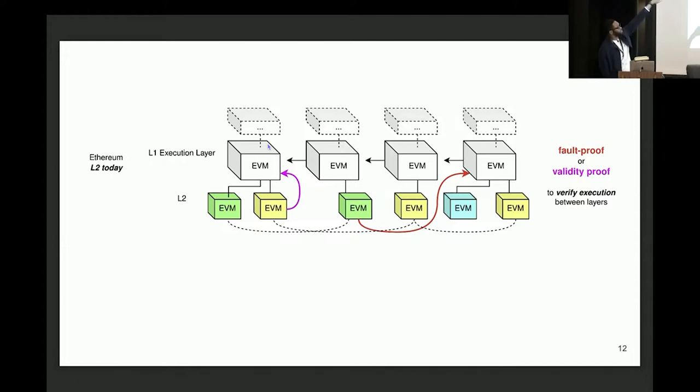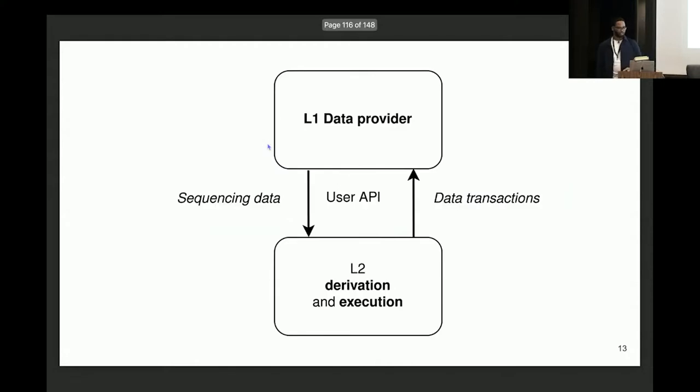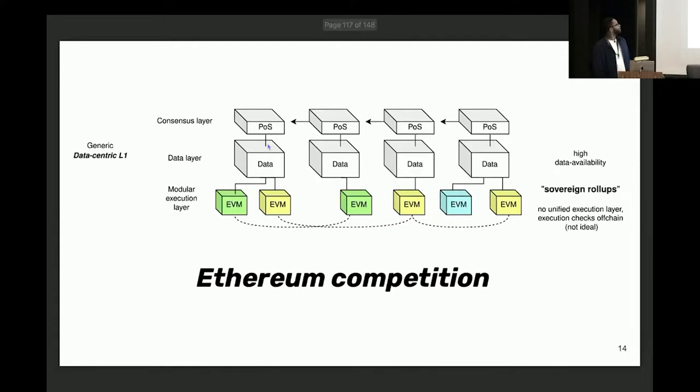This is how it fits in L2s today. You have the proof of stake at the very top, the EVM, and then L2s don't really need to interact with the proof of stake. We've already made things modular enough that all an L2 needs is the state that the EVM exposes. So you have multiple L2s interacting with the same L1 EVM. And again, we can verify execution between the EVM and L2 via either fault proof or validity proof, the execution check that I mentioned.